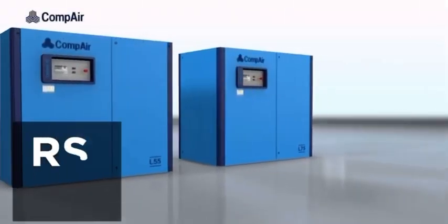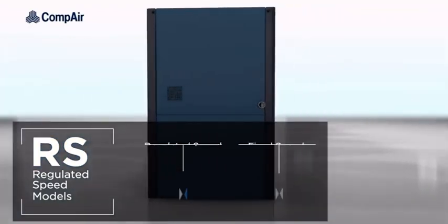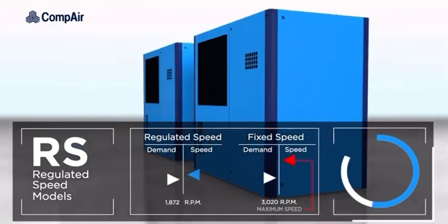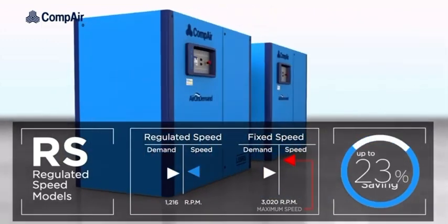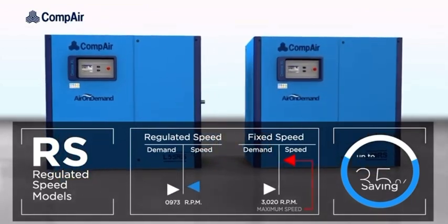These dynamically adjust free air delivery to exactly match demand, giving a potential saving of up to 35% when compared to equivalent fixed speed on-load off-load machines. Regulated speed machines are also equipped with a unique innovative automatic thermostatic valve.